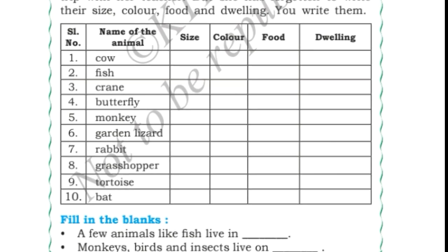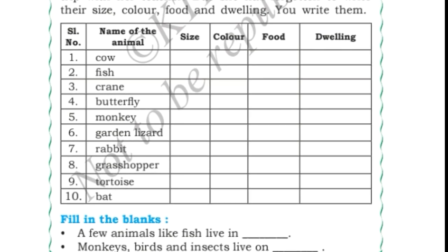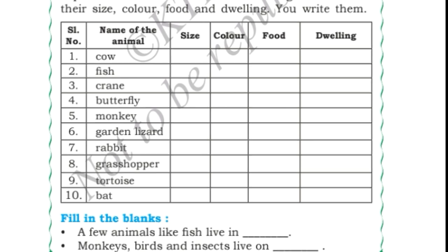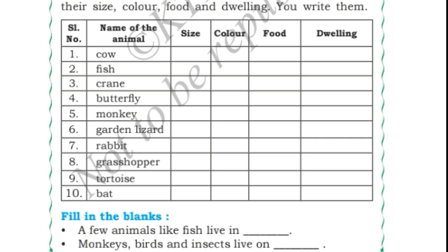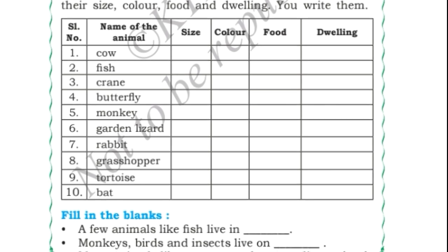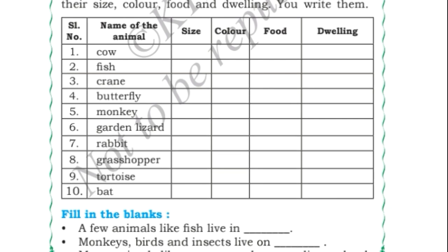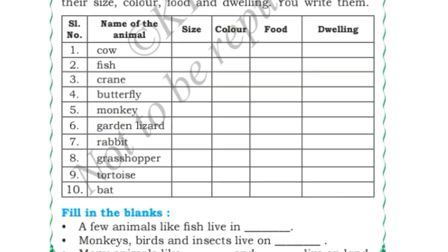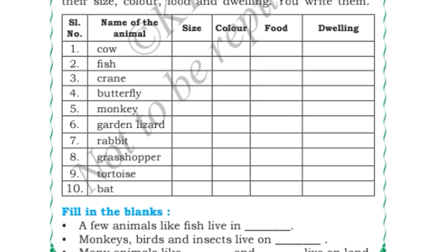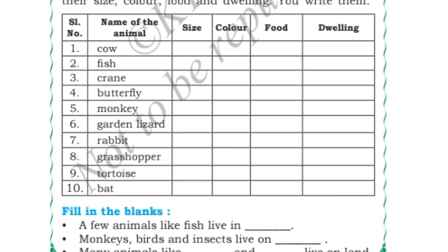Here one column is there in which some animal names are given. We have to write the size, colour, food, and dwelling — meaning the place where they live — of the following animals. Cow: size is big, colour can be white, brown, or black, food is grass, and dwelling is a shed. Fish: size is small, colour is whichever you have seen, food is insects, and dwelling is water.